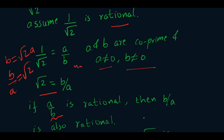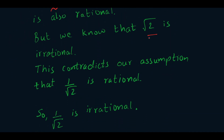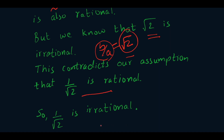Since a by b is rational, b by a is also rational. But we know that root 2 is an irrational number. So b by a was equal to root 2 — a rational number cannot equal an irrational number. This contradiction arises because of our assumption that 1 by root 2 is rational. Hence, 1 by root 2 is an irrational number.